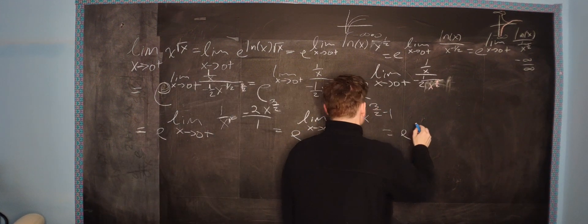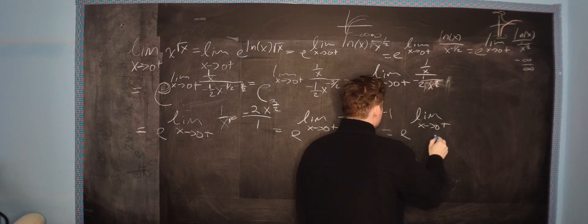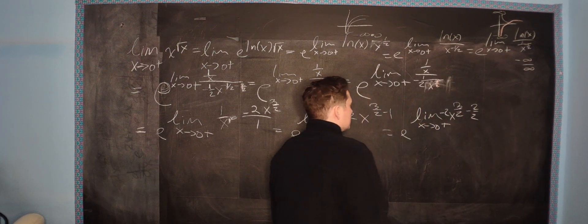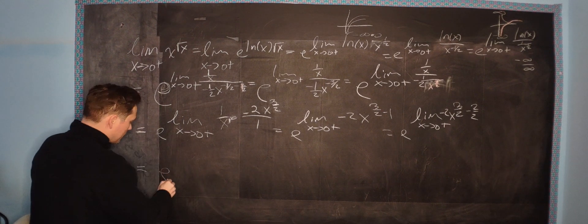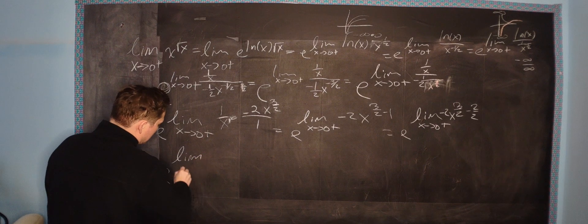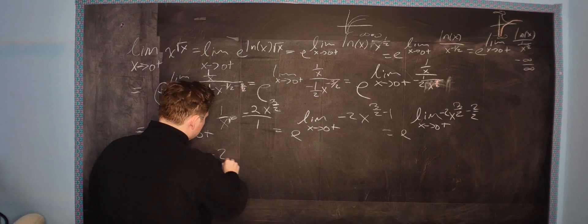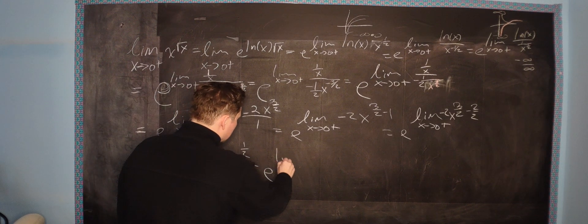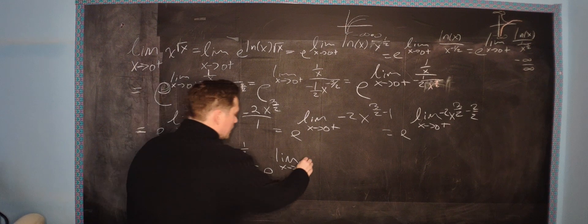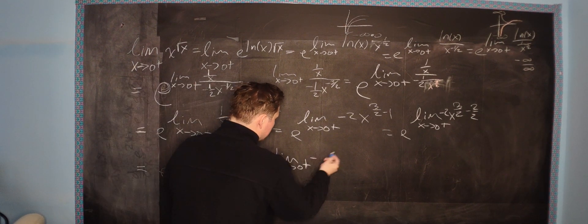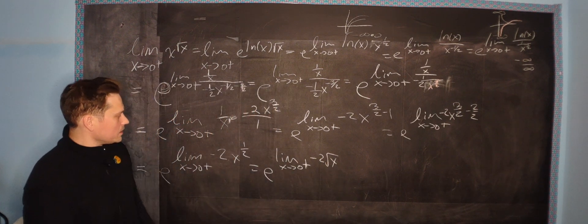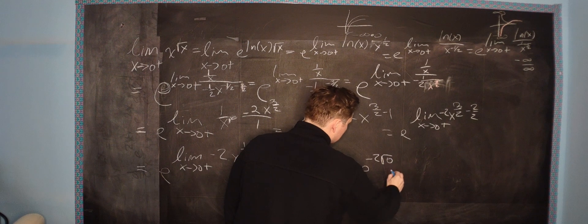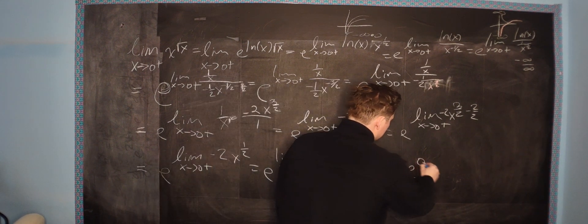Good progress. So it's e raised to the limit as x approaches 0 from the right side of negative 2 times x to the 1 half. From here, you can just do direct substitution. So it's e to the negative 2 times the square root of 0, which is just 0. Therefore, you end up with e to the 0, which is 1.